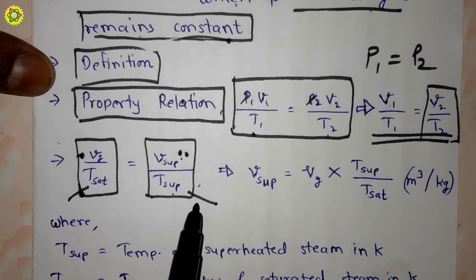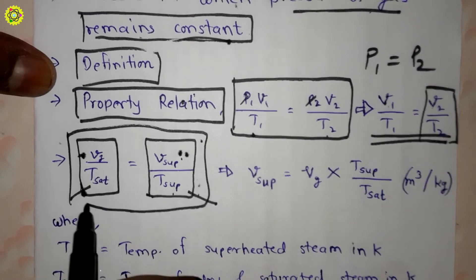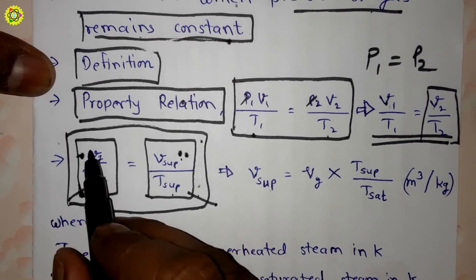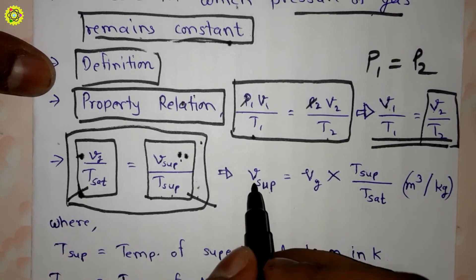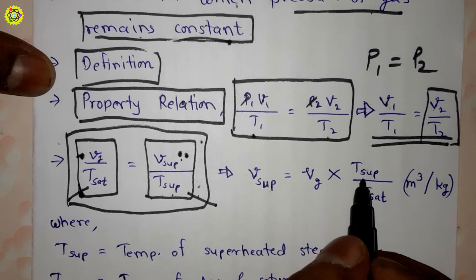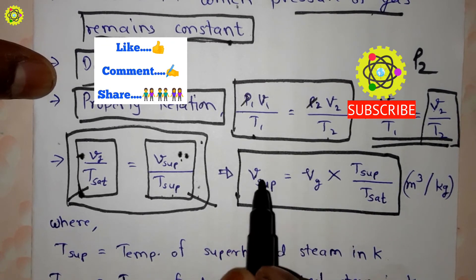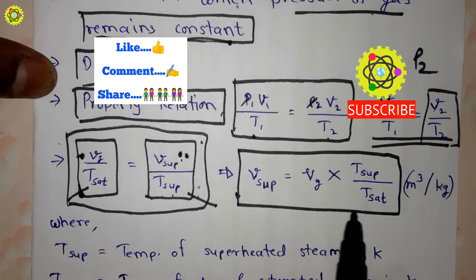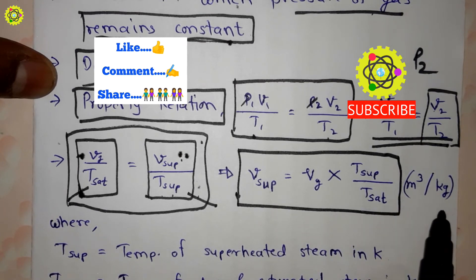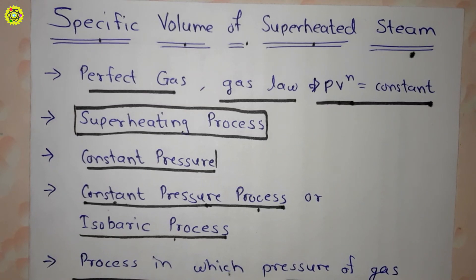Simplifying this expression, we get: v_sup = vg × T_sup / T_sat. This is our equation for the specific volume of superheated steam. The specific volume of superheated steam, like any specific volume, is measured in units of cubic meters per kilogram (m³/kg).